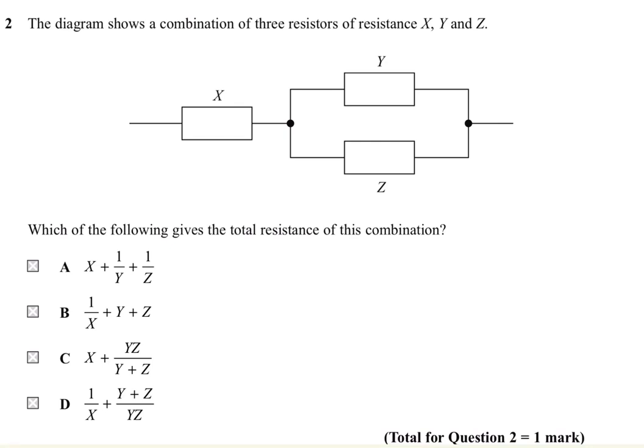In this question, the diagram shows a combination of three resistors of resistance X, Y, and Z. The total resistance here of the combination, this is RT. We have two resistors, Y and Z, connected in parallel.